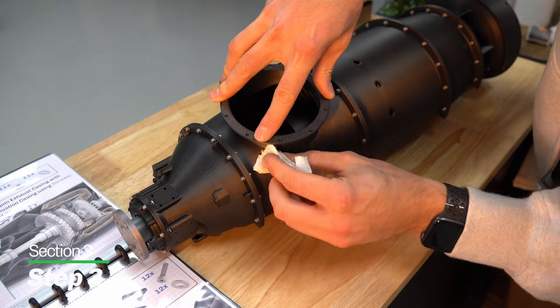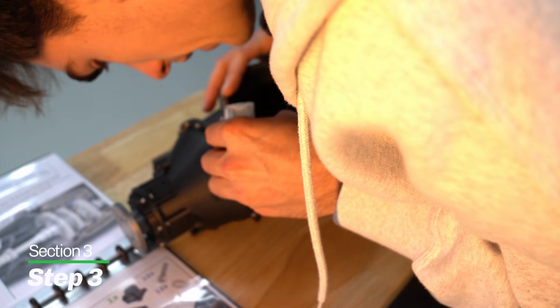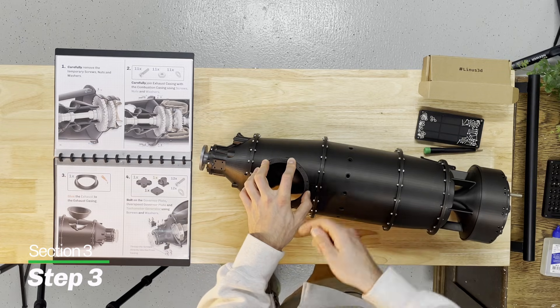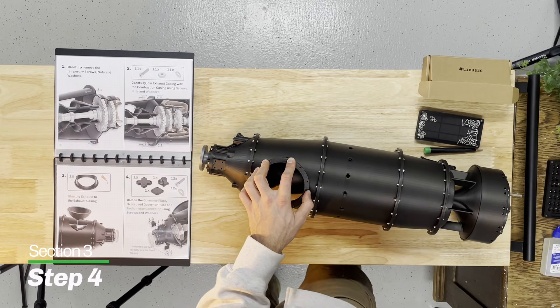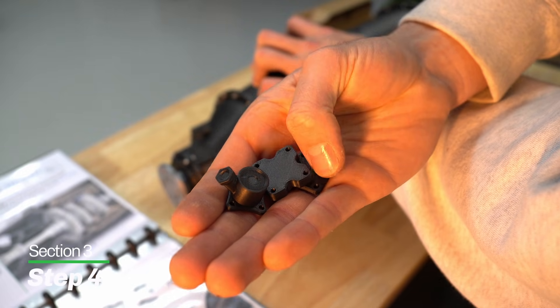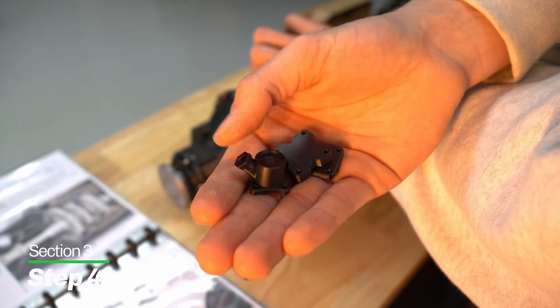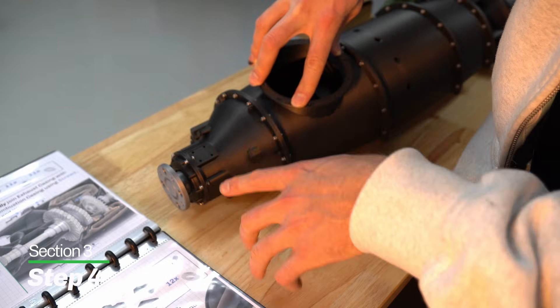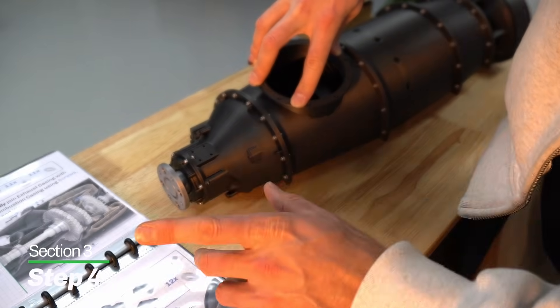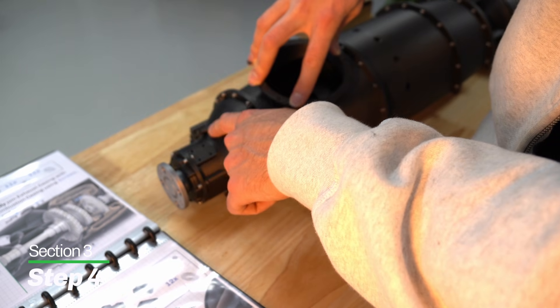It's looking sweet. Whilst we're waiting for this to cure, we can head on to step number four. We're going to grab the governor plate, the overspeed governor plate, and the tack generator. We're going to be screwing them into the front casing using screws and washers only. These self tap into the front casing.